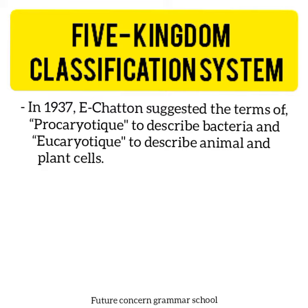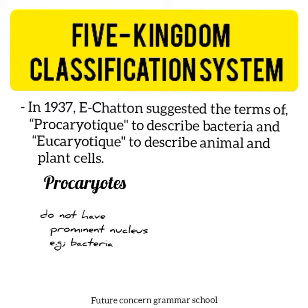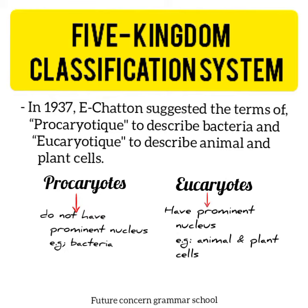In 1937, E. Chaton suggested the terms prokaryotic to describe bacteria and eukaryotic to describe animal and plant cells. 1937 میں E. Chaton نے bacteria کے cell کے لیے prokaryotic اور جانور اور پودوں کے cell کے لیے eukaryotic کی اصطلاحات متعارف کروائیں۔